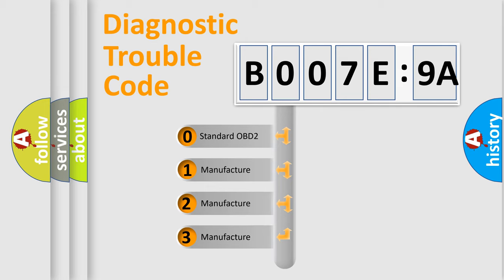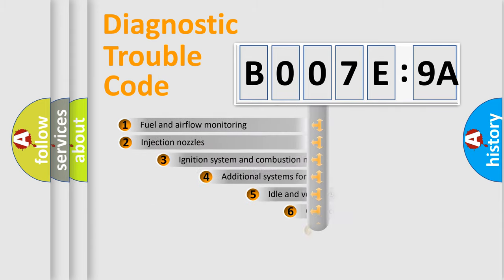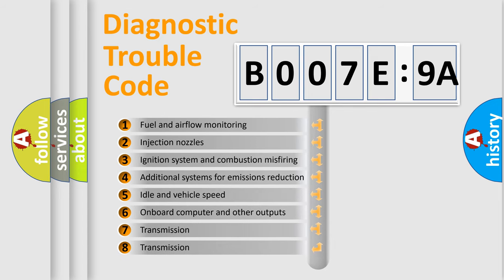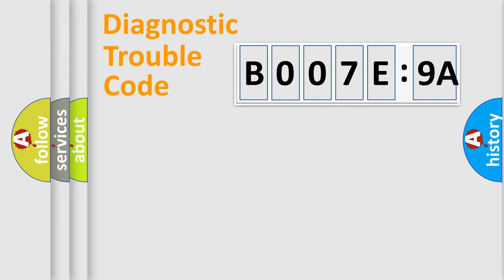If the second character is expressed as zero, it is a standardized error. In the case of numbers 1, 2, 3, it is a manufacturer-specific error. The third character specifies a subset of errors. The distribution shown is valid only for the standardized DTC code. Only the last two characters define the specific fault of the group.